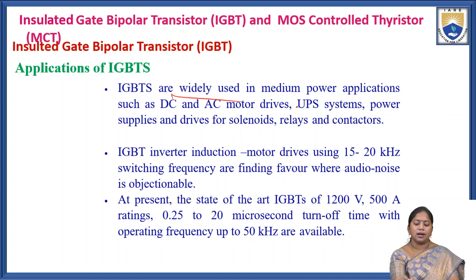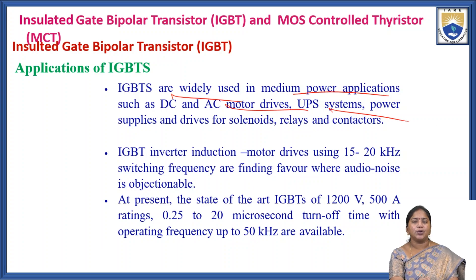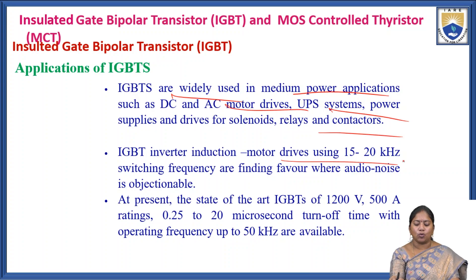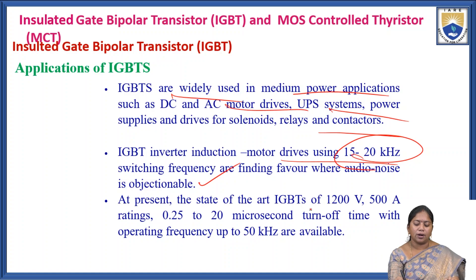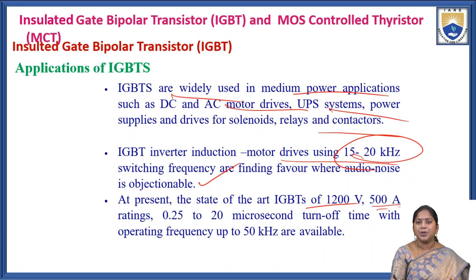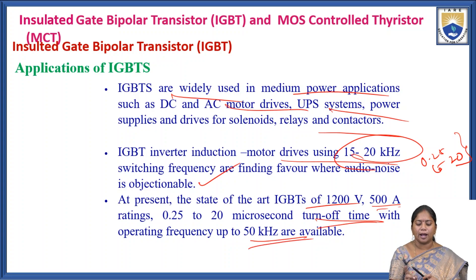IGBTs are widely used in medium power applications such as DC and AC motor drives, UPS systems, power supplies, and as drives for solenoids, relays, and contactors. IGBT inverters for induction motor drives use 15 to 20 kHz switching frequency where audio noise is objectionable. The state-of-the-art IGBT has ratings of 1200 volts and 500 amperes with turn-off times of 0.25 to 20 microseconds, and operating frequencies up to 50 kHz are available.